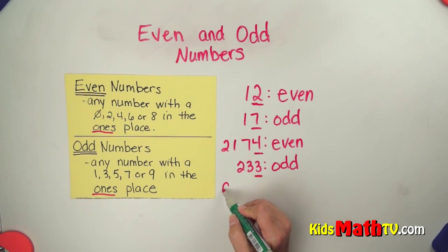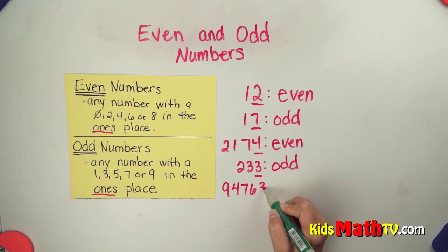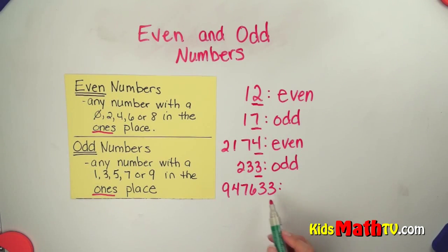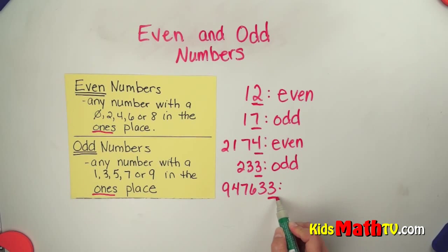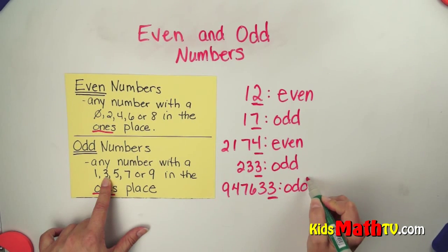How about a big number? 947,633. I don't have to worry about anything except for this number here in the ones place. That number is on this list, so it is also an odd number.